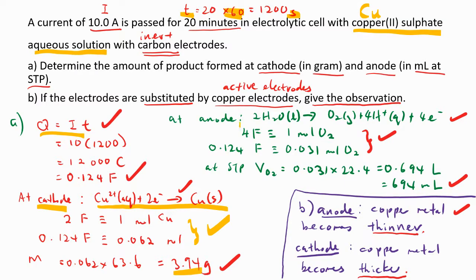At anode, it is water being oxidized instead of SO4 2-. So after you did the calculation, and remember it says at STP, so you have to multiply by 22.4, but final answer must be in milliliter as requested.